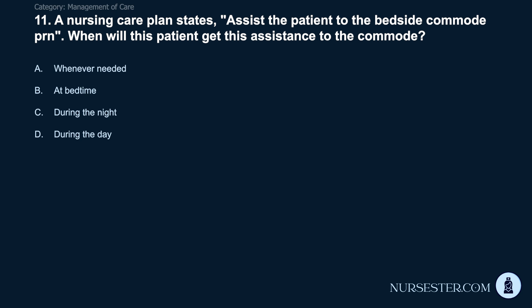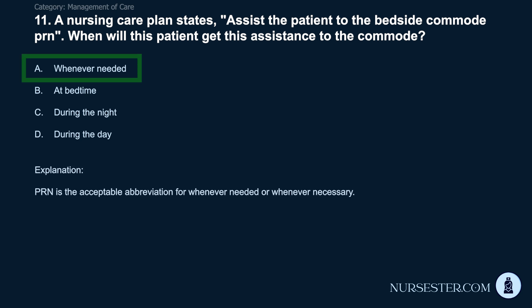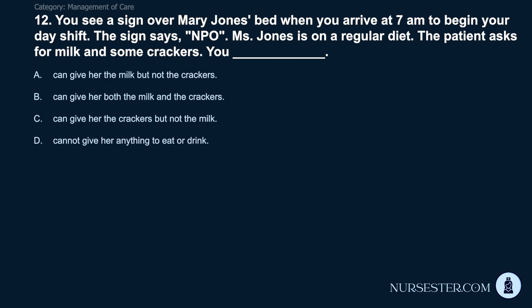Question 11: A nursing care plan states 'assist the patient to the bedside commode PRN.' When will this patient get this assistance? A) Whenever needed. B) At bedtime. C) During the night. D) During the day. Correct answer: A. Whenever needed. PRN is the acceptable abbreviation for whenever needed or whenever necessary.